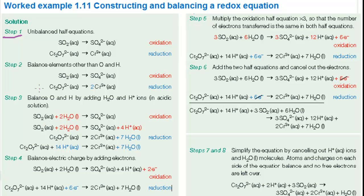Step 2 you balance all the elements other than oxygen and hydrogen. No change is needed in the oxidation reaction, one sulfur atom on each side, but in the reduction two chromium atoms on the left hand side would generate two chromium 3 plus ions on the right so you need to insert a 2 here.